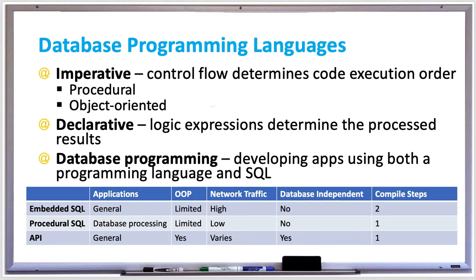There are two main types of programming languages: imperative languages and declarative languages. With imperative languages, they tell what and how when programming. They follow control flow logic such as branching or loops and determine the execution order. They use compilers to translate the code you write into low-level machine code or bytecode.